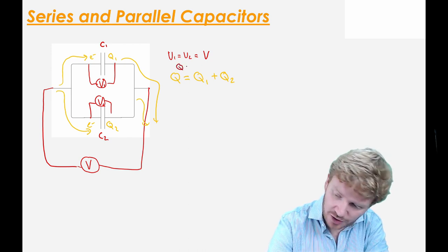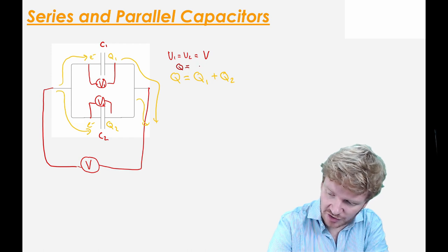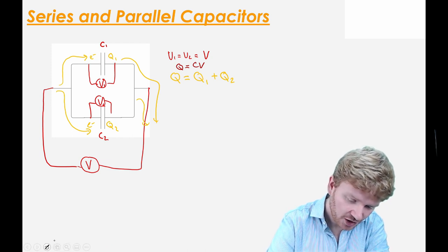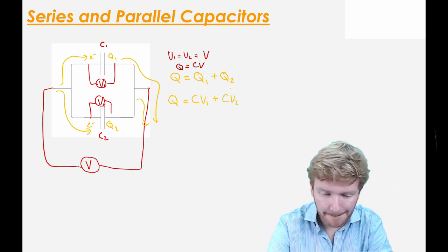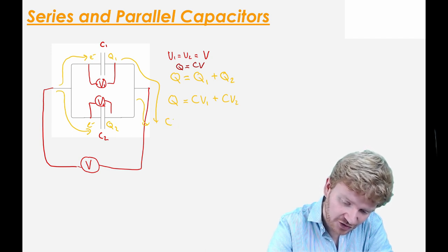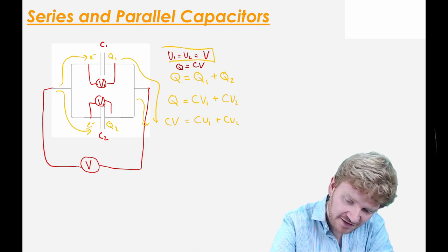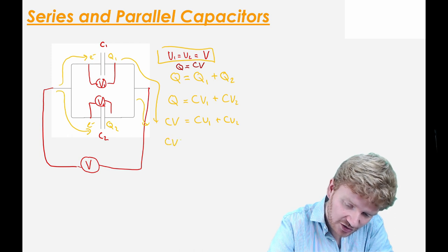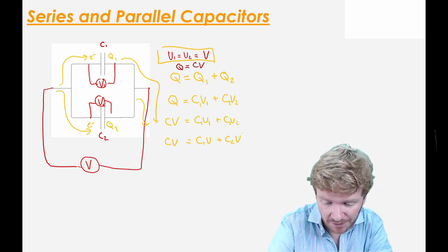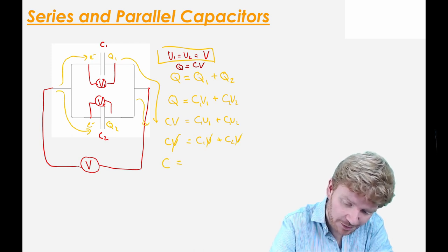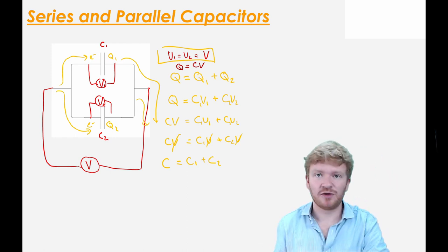Now, using Q = CV: Q total is equal to C₁V₁ plus C₂V₂. I can also rewrite big Q as the total capacitance times the total voltage, so C_total × V = C₁V₁ + C₂V₂. But since the voltage on both is the same, C_total × V = C₁V + C₂V. There's a common factor, so I can take that out and say the total capacitance is equal to the sum of their individual capacitances.